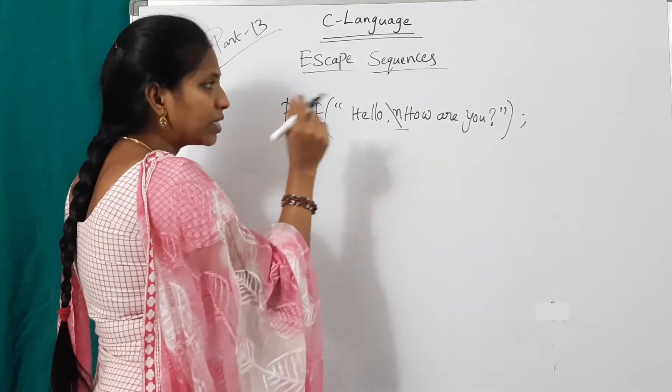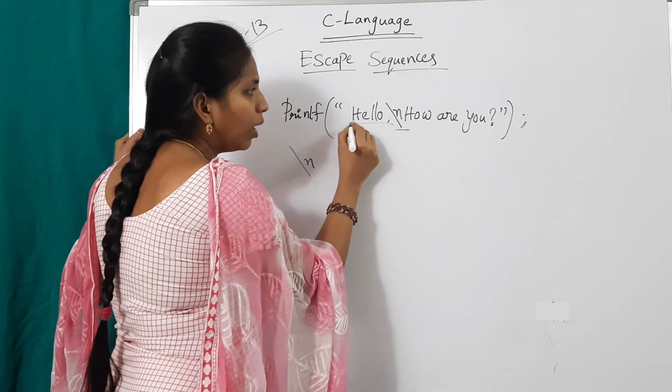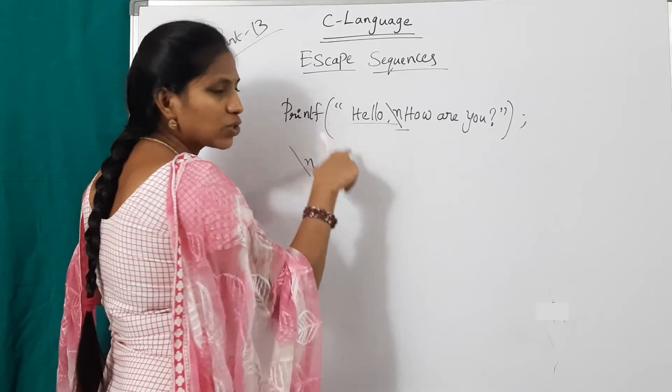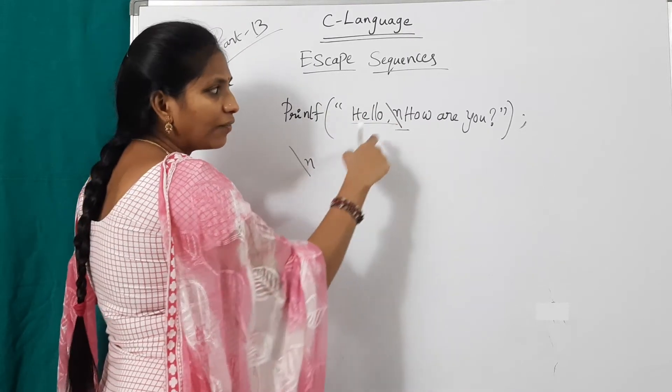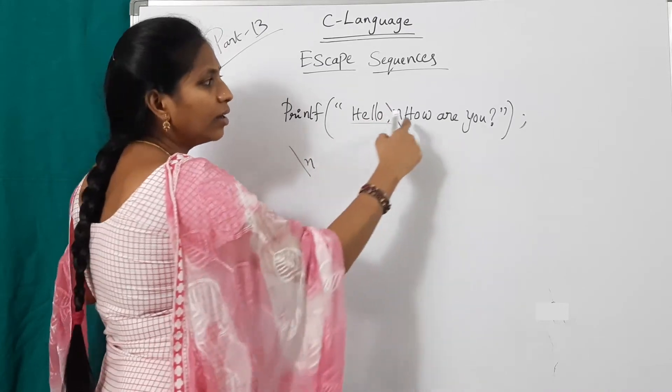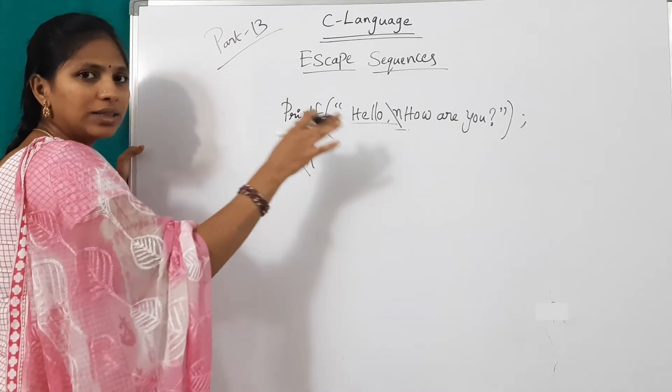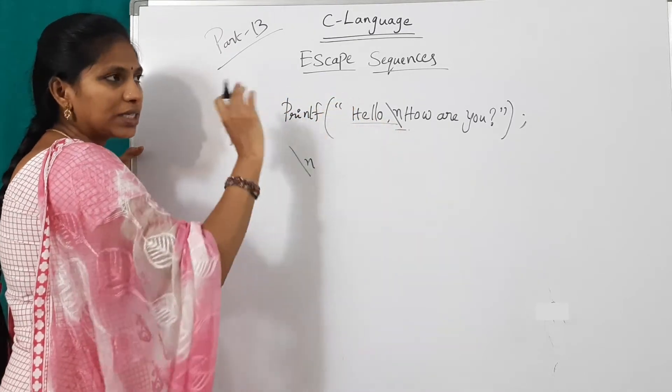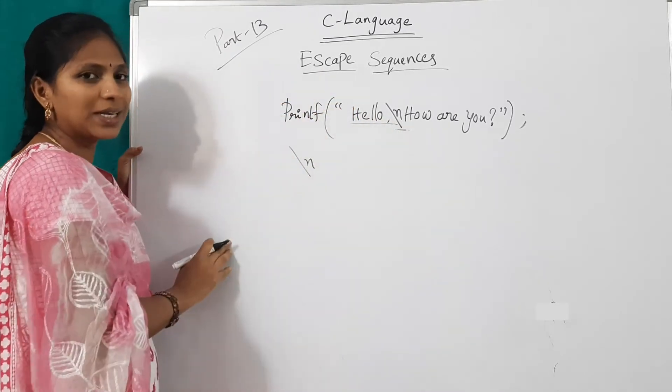So the result of this statement is hello. Hello up to comma at first line. After that, control goes to the next line because of slash n. Next line, how are you. It prints this statement in two lines. Hello in first line and how are you in next line.